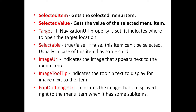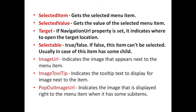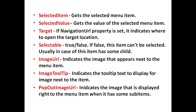Selected value property is used to get the value of the selected menu item. If the navigation URL property is set, the target property indicates where to open the target location. Selectable property is set as true or false; if this property is set to false, then this item cannot be selected — usually used if this item has some child items. Image URL indicates the image that appears next to the menu item. Image tooltip indicates the tooltip text to display for the image next to the item. Popout image URL indicates the image displayed to the right of the menu item when it has some sub-items.